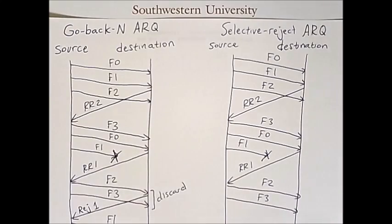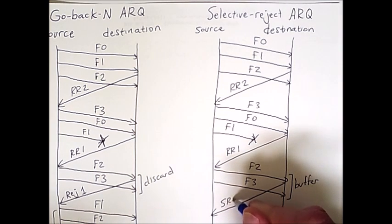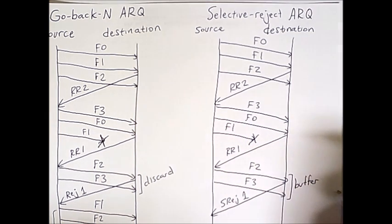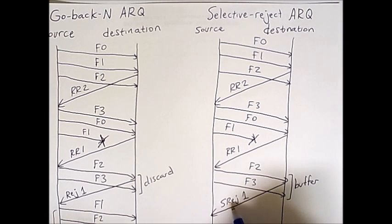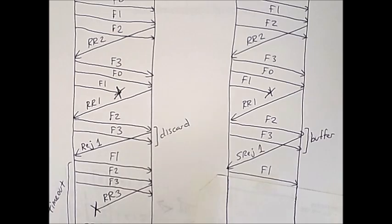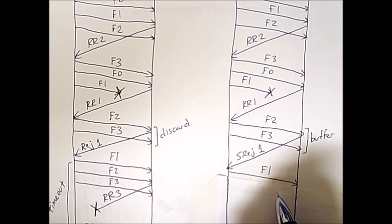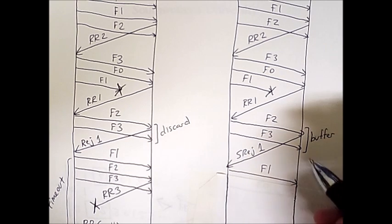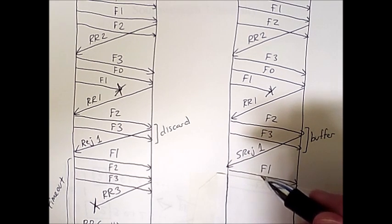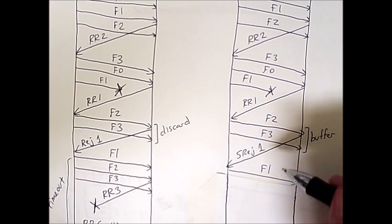Rather, it buffers them and saves them for later. It does, however, immediately send a selective reject frame indicating that 1 needs to be resent. Once this selective reject frame is received, the source resends frame 1, and in principle, it could immediately go on to send frame 0, except the window on the source side is empty. Once this selective reject 1 was received, the source knew that frame 0 had been received, 1 had been lost, and it had already sent frames 2 and 3. So at this point, the source is waiting for a ready-to-receive message so that it can expand its sliding window.